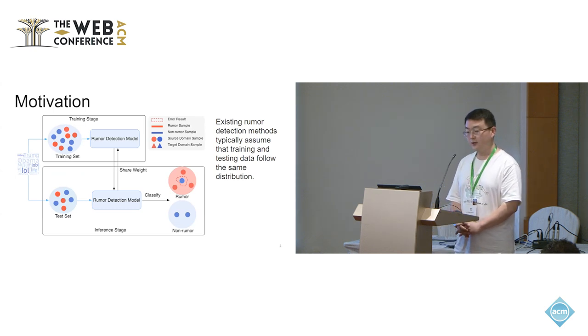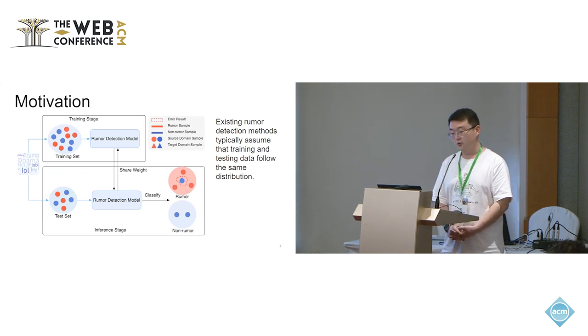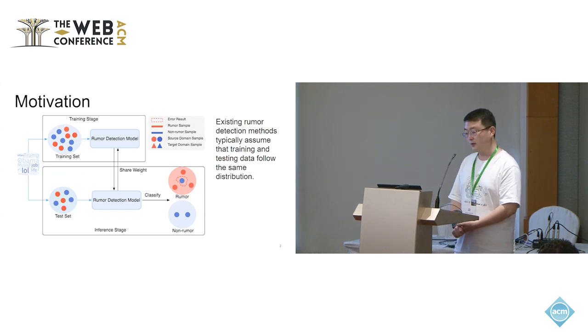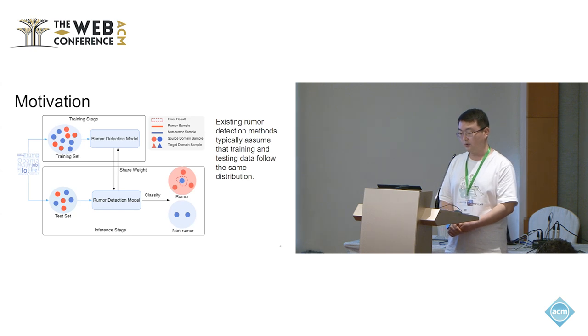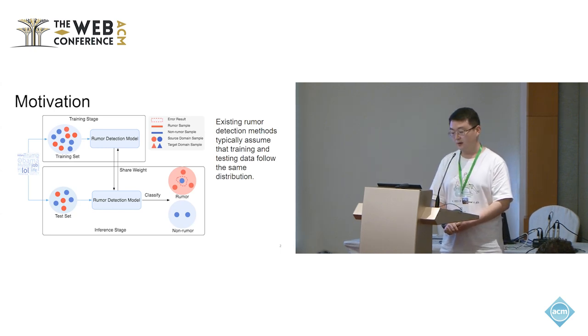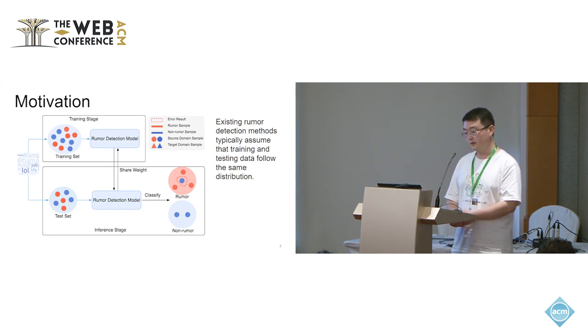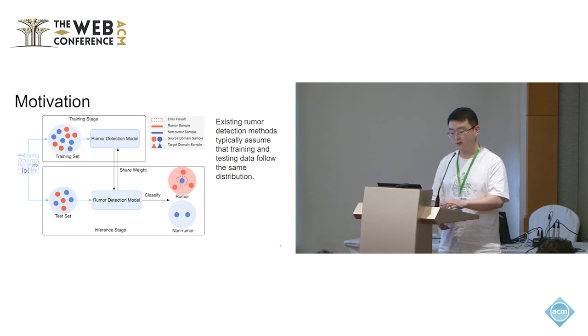Currently, the rumor detection approach generally relies on the training and test paradigm of deep learning. The model is initially trained to identify correlation between labels and input features using the training sets. After training, the model is used to classify the sample from test sets. This approach may work well under the assumption that the training and test sets have identical distributions.